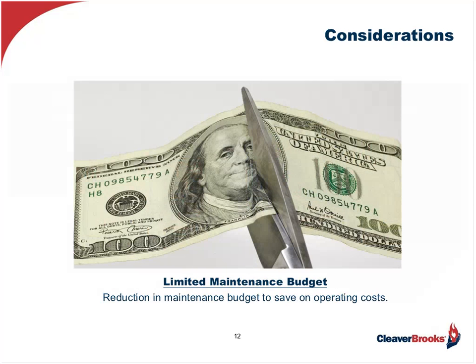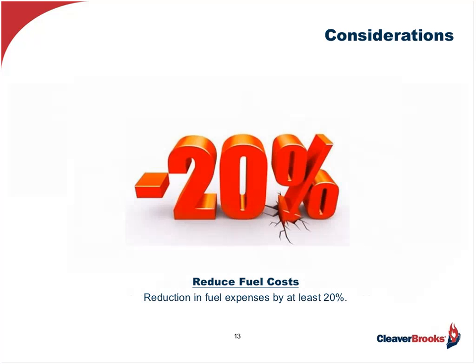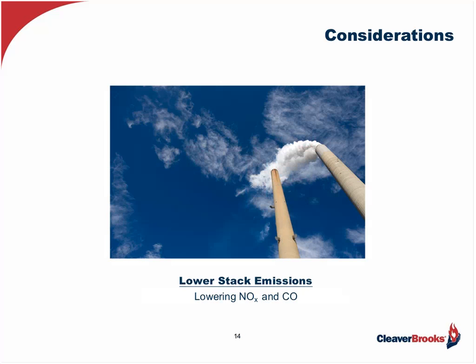They're cutting the maintenance budget by reducing staff and keeping costs as low as possible. They want to reduce fuel costs by a minimum of 20%. At the same time, they need to reduce NOx requirements to 20 parts per million — as mandated for their locale and capacity — but are looking at getting down to as low as 9 parts per million or less, then selling those emission credits on the open market to reduce operational costs. They also want to hold CO at 50 parts per million or less, ideally zero.